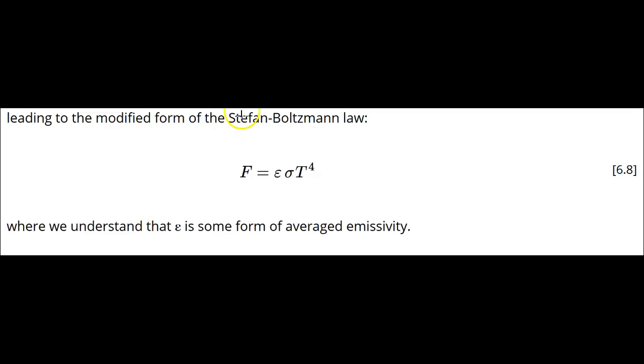This form of the Stefan-Boltzmann law is the one that we will use the most. Note that for a perfect emitter, epsilon equals 1, the total irradiance emitted into a hemisphere equals the product of the Stefan-Boltzmann constant, sigma, and the temperature to the fourth power.